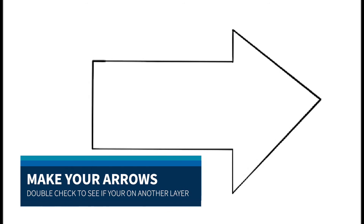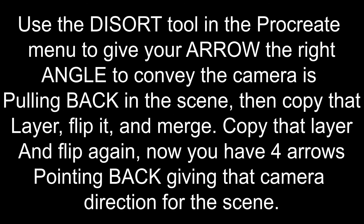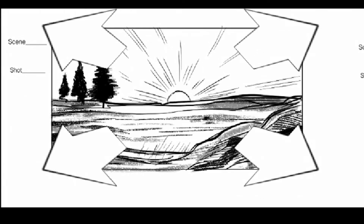Let's make some arrows. These are vital when you're doing storyboards to help with camera direction and scene layouts. Use the distort tool in the Procreate menu to give your arrow the right angle to convey the camera pulling back in the scene. Then copy that layer, flip and merge. Copy that, flip again. Now you have four arrows pointing back giving that camera direction for the scene.